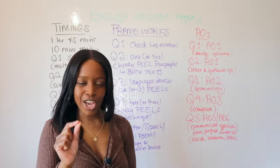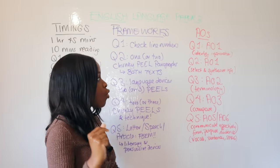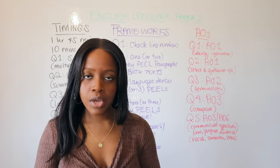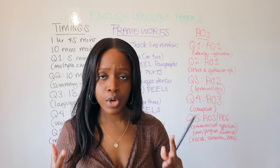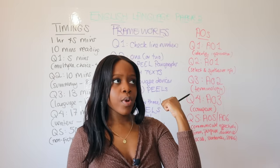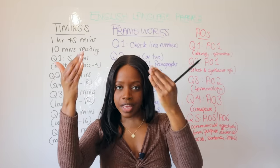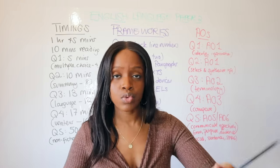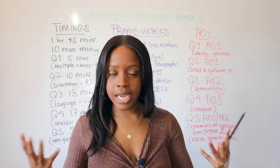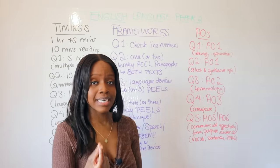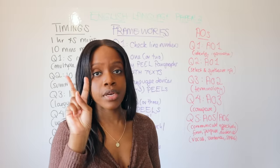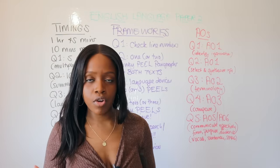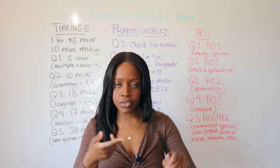Question Two also tests AO1, but an additional dimension: the ability to select and synthesise information. When writing your summary, show awareness that you're identifying why Source A and Source B are similar or different — synthesising the evidence rather than just listing it. This synthesising aspect of AO1 is tested specifically in Question Two.